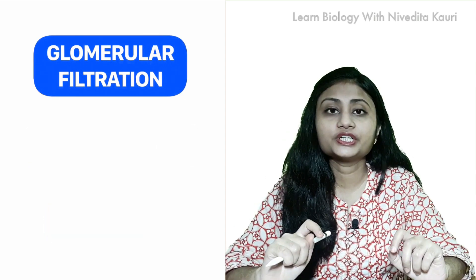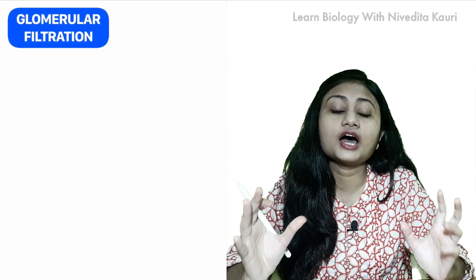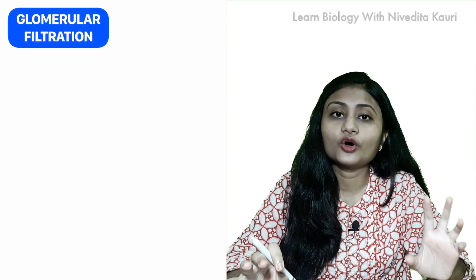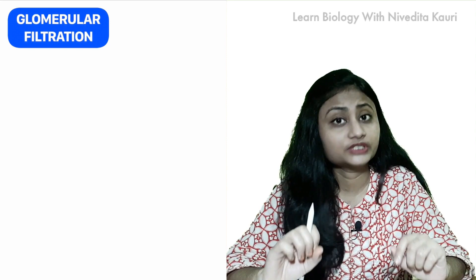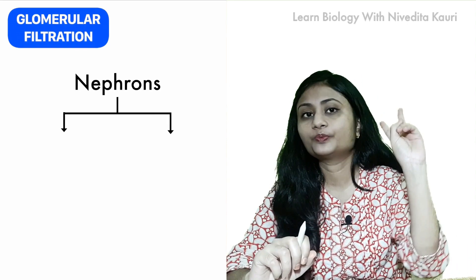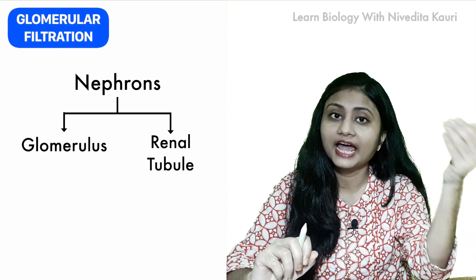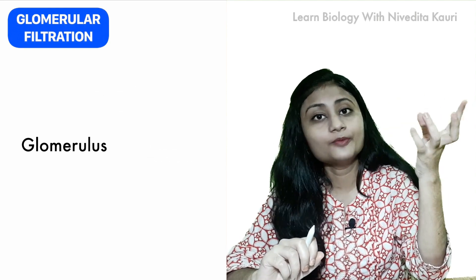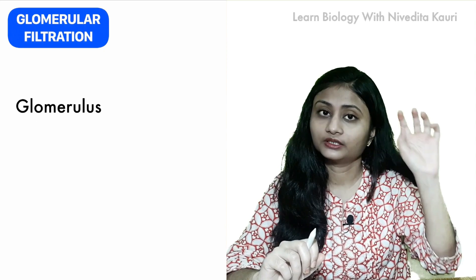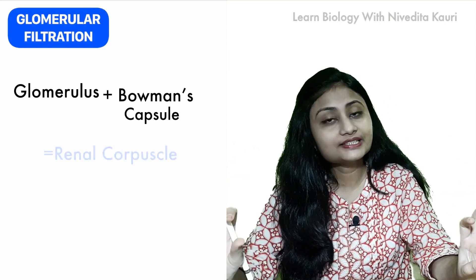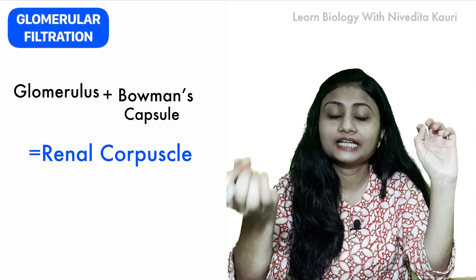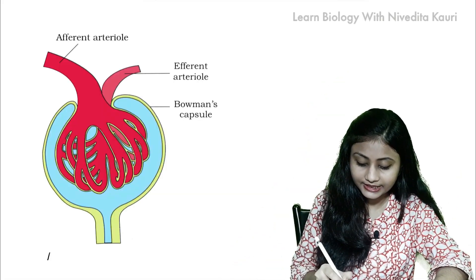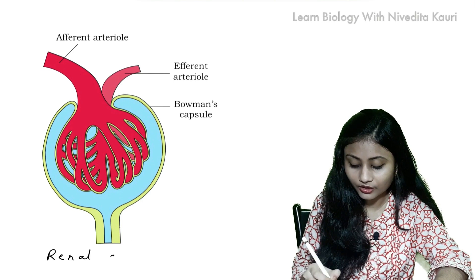Glomerular filtration is a process of ultrafiltration of blood. While discussing the structure of the nephron, I told you that the nephron has two parts: glomerulus and the renal tubule. The first part of the renal tubule is the Bowman's capsule. The glomerulus and the Bowman's capsule together are known as the renal corpuscle. This is the renal corpuscle.